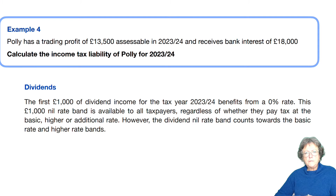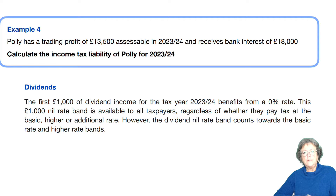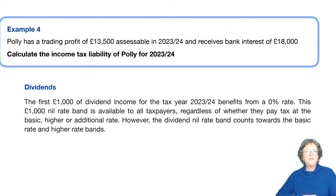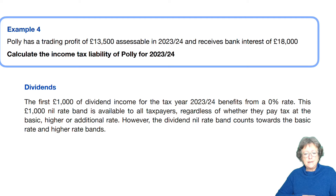So that was simple enough. What happens if somebody has non-savings income? We're going to have a look at Polly, example number four. Polly has trading profits of £13,500, which is assessable in 23/24, and bank interest of £18,000. And we are going to calculate her income tax liability for 23/24.